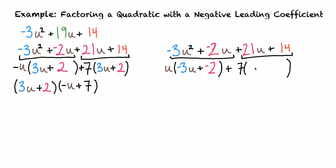So, we can factor out a -7, and then, when we factor out the -7, 21u divided by -7 is -3u, and 14 divided by -7 is -2.